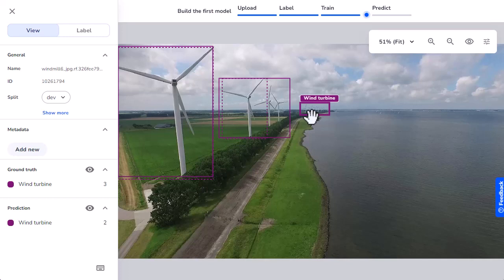For my use case, I think it's okay if the model misses these ones because they are so far away from the camera. However, if I want my model to improve its ability to detect wind turbines from a distance, I can upload more images that represent wind turbines from far away and then retrain my model.